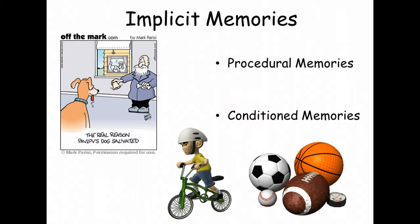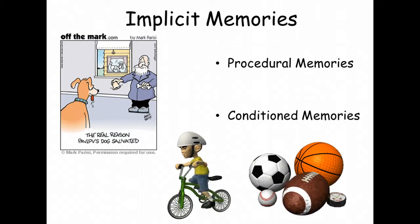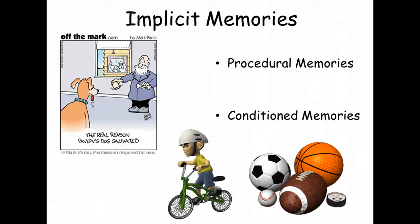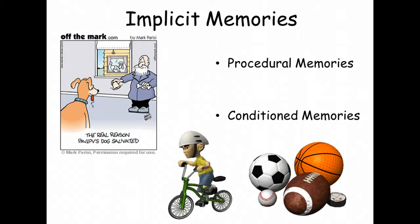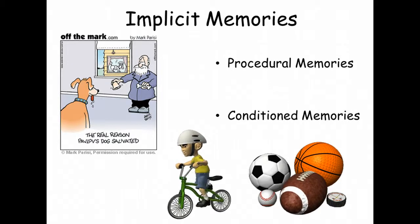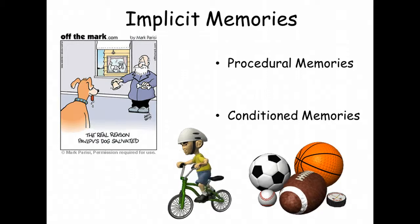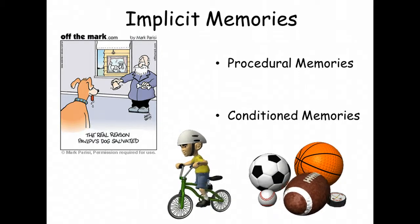Implicit memory can also be divided into two parts: procedural and conditioned. Procedural memory is the memory of how to perform different acts and skills — essentially, the memory of how to do certain things, like riding a bike or tying your shoes. Once you learn how to ride a bike, you'll never forget it. Conditioned memory deals with memories that are tied to a stimulus — for example, the Pavlov experiment with Pavlov's dog and salivation.